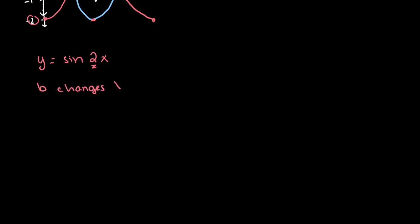So b changes the period of our graph. So the new period will equal the old period over b. And if you recall, the period is how long our graph takes to repeat itself. So in the case of sine, it's 360 degrees, because that's how long it takes to do one loop.